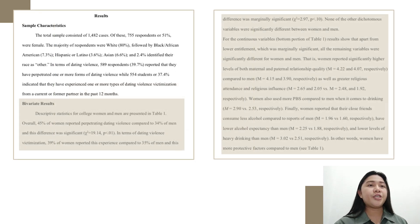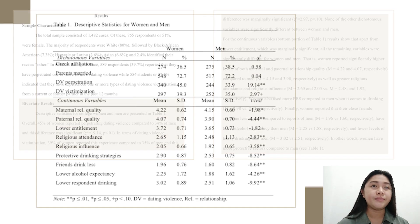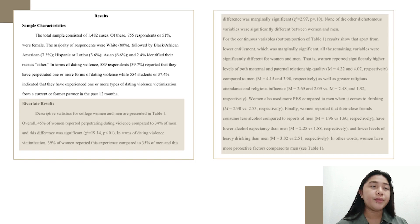Now, the descriptive statistics for college women and men are presented in Table 1. Overall, 45% of women reported perpetrating dating violence compared to 34% of men, and this difference was significant.